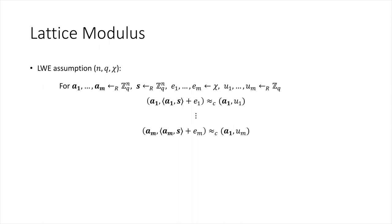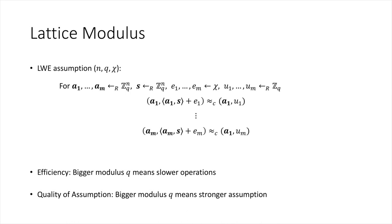In the LWE problem, our goal is to distinguish the following two distributions. In the first, we are given uniformly sampled vectors a1 through am in Z_q^n and their noisy inner products with a uniformly sampled secret vector s. In the second, we are given the same vectors but with uniformly random elements in Z_q. The LWE assumption states these two distributions are computationally indistinguishable.